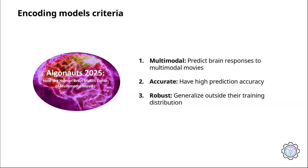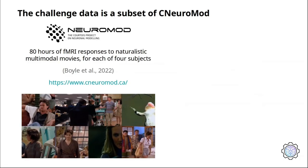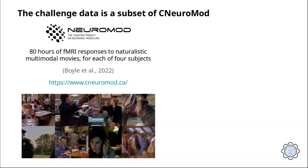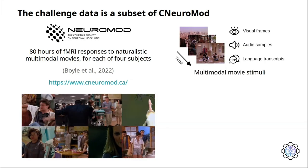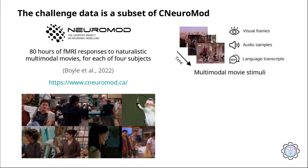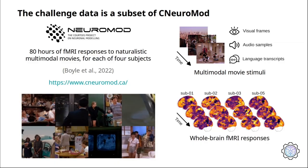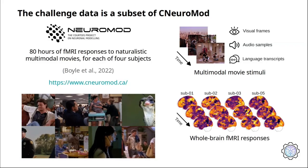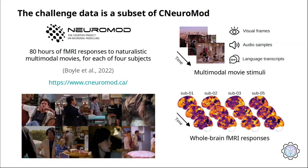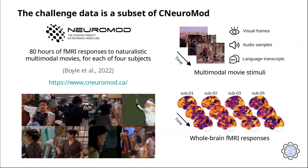In order to promote these three criteria, we base the challenge on data from CNeuromod. CNeuromod is the largest dataset of human neural responses to naturalistic multimodal stimulation. During the challenge, you will use a subset of CNeuromod consisting of 80 hours of multimodal movies, including visual frames, audio samples, and language transcripts, and the corresponding neural activations. Whole brain fMRI responses for four subjects divided into 1000 functionally defined parcels. During the challenge, you are invited to use these data to build encoding models that predict fMRI responses to multimodal movie stimuli.